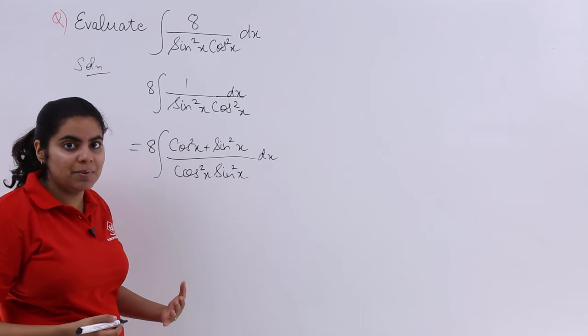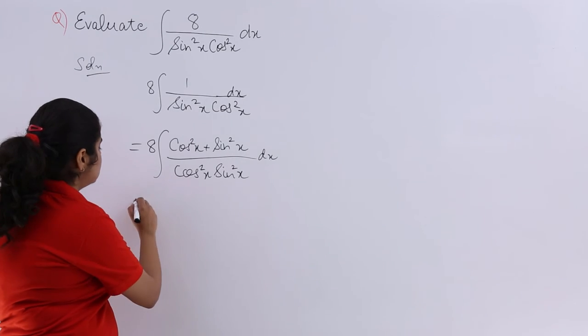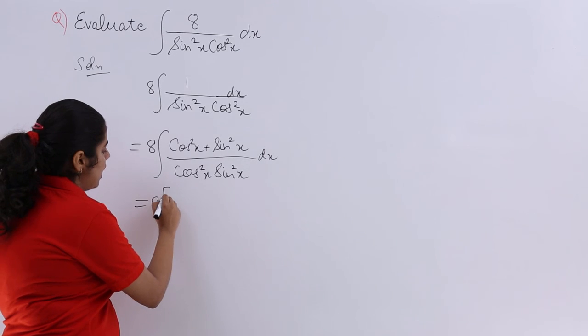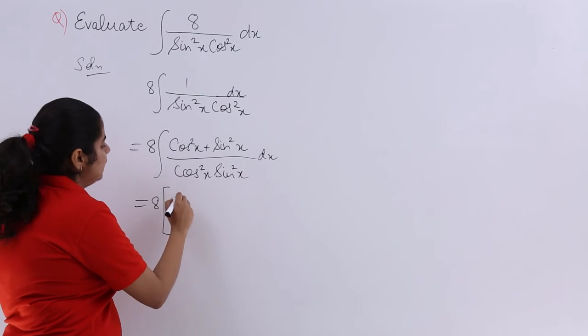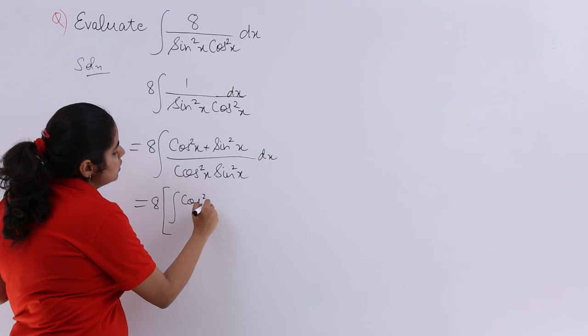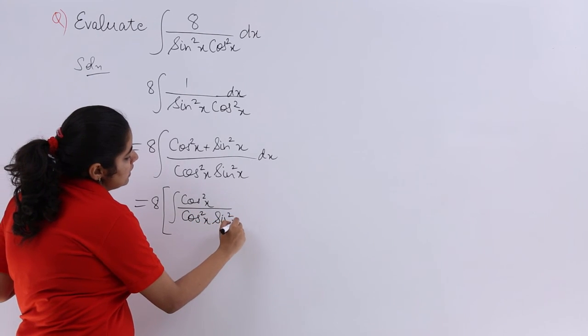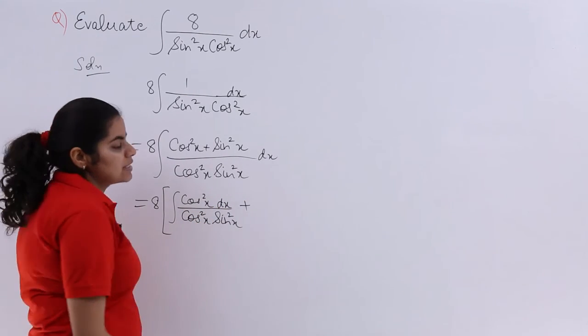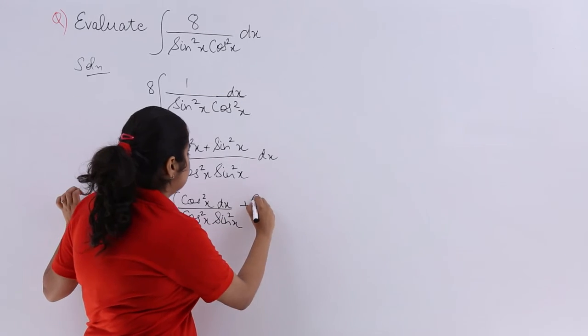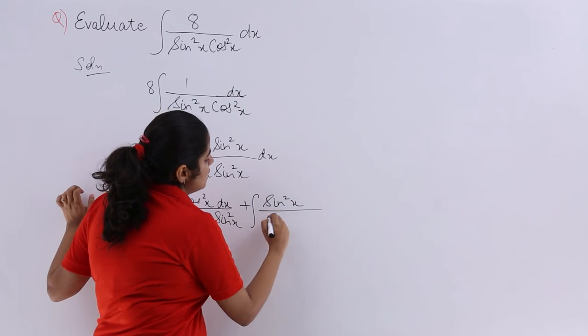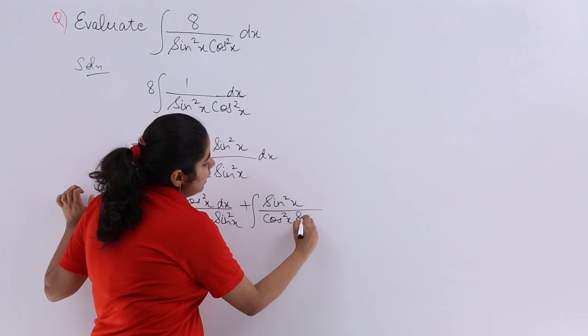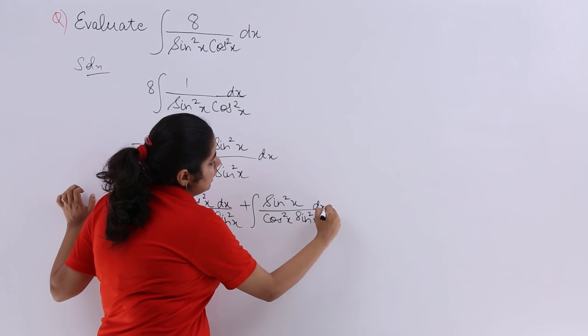Then now it is of very much interest to us. As you see 8 is there outside and integration of cos square x upon cos square x sin square x dx plus, again you can separate the integral, that is the property of integrals that we have studied. Sin square x upon cos square x sin square x dx.